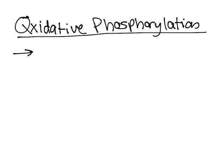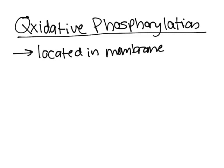It's essentially an electron transport chain, and it's located in the membrane — but in eukaryotes like ourselves, more specifically in the cristae of the mitochondria.